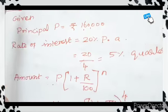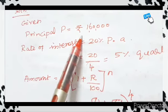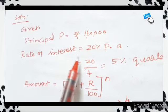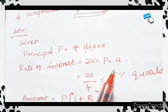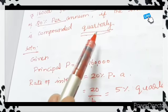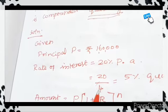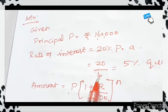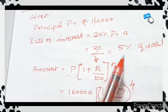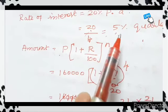What is given? First you have to write the given conditions. Principal P equals Rs. 160,000. Rate of interest equals 20% per annum. Since the interest is compounded quarterly, you have to divide the rate by 4. So 20 divided by 4 equals 5%. For every quarter, the interest rate is 5%.